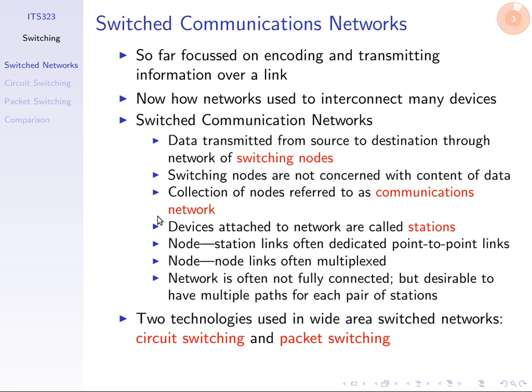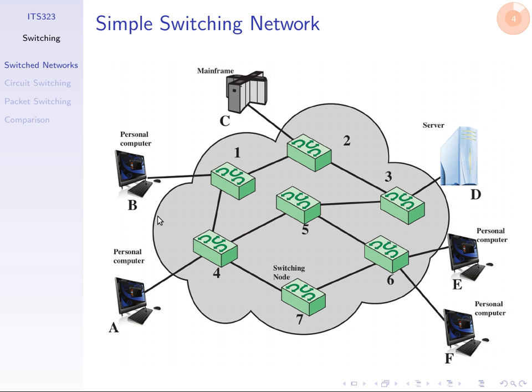First, how do we use networks to interconnect many devices? Think of not just a small area to connect my computer to the desktop, but any set of computers across the globe. The general technique we use is switched communication networks. We have end user devices around the outside of a cloud — labelled A, B, C, D, E, and F — generally called stations. Think of them as the computing devices that end users use.